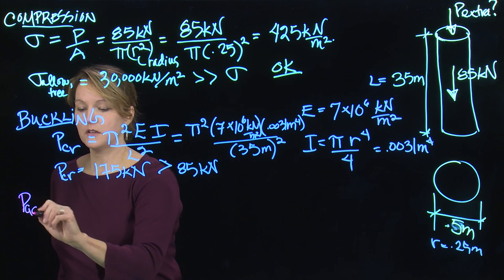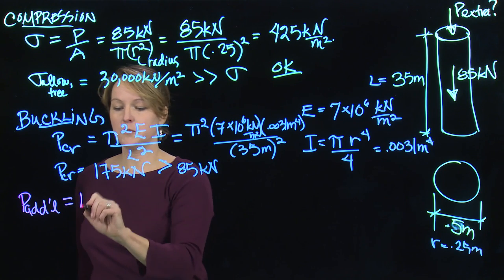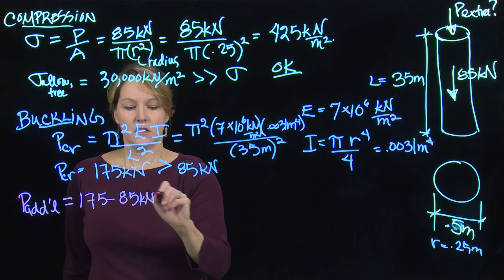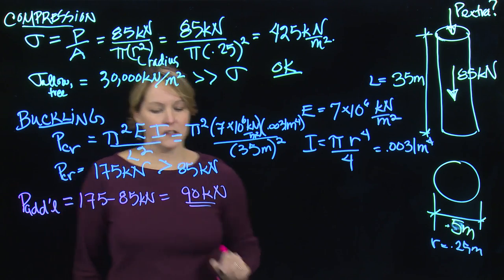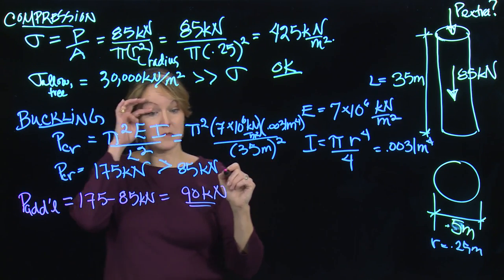An additional load that I can put on is going to be 175 minus 85, or I can put on an additional 90 kilonewtons. I think that owl's tree can handle an additional 90 kilonewtons.